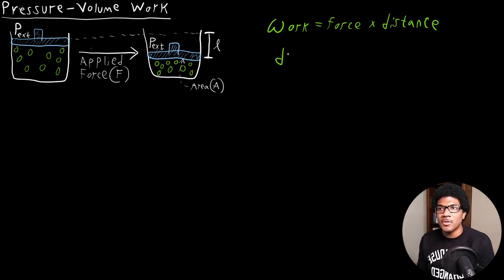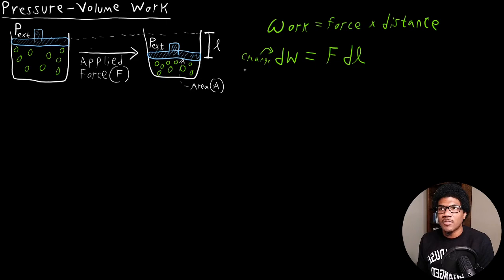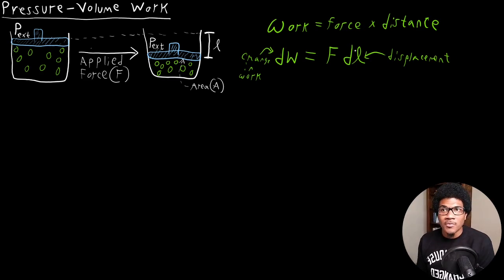That equation would be DW for our change in work, equal to force times the change in L. So DW is the change in work, F is your applied force, and DL is the displacement of your piston. This is essentially from our general definition of work: work equals force times displacement.